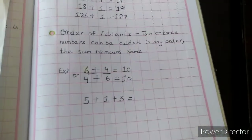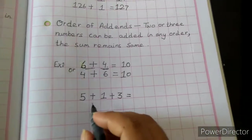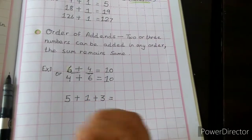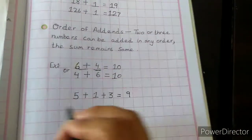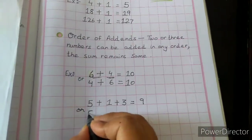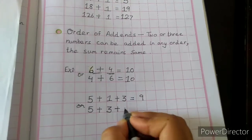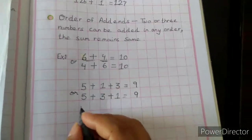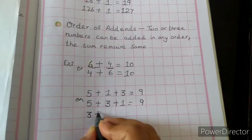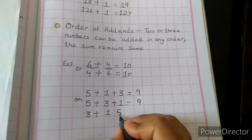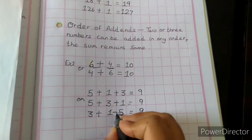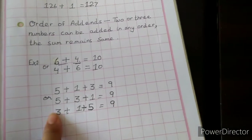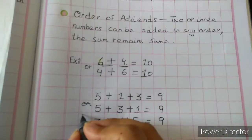Let's take another example: 5 plus 1 plus 3. 5 in my mind, 1 finger up gives 6; then 6 in my mind, 3 fingers up gives 9. The answer is 9. If I write it as 5 plus 3 plus 1, or 3 plus 1 plus 5, the sum remains the same, because the add-ins are not changed — only their order or place is being changed. So it doesn't matter.